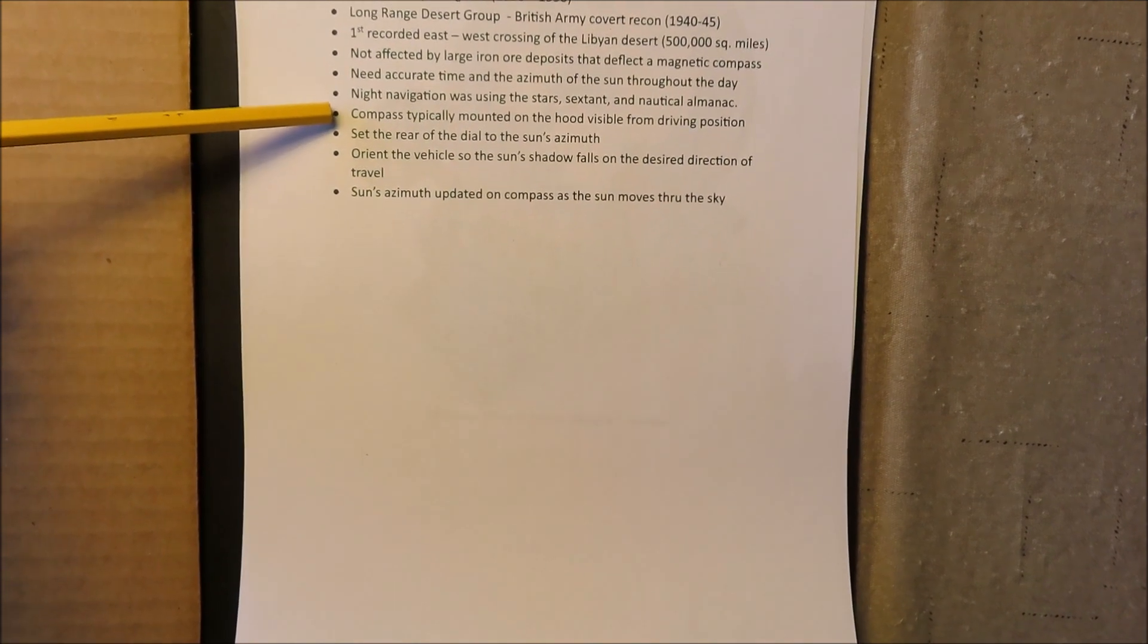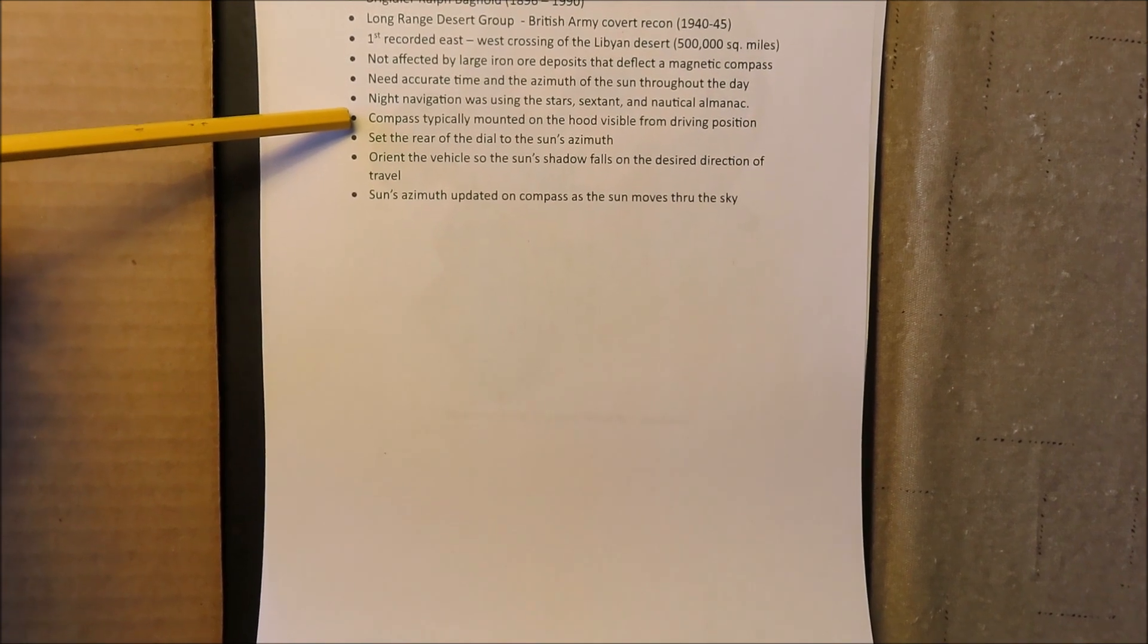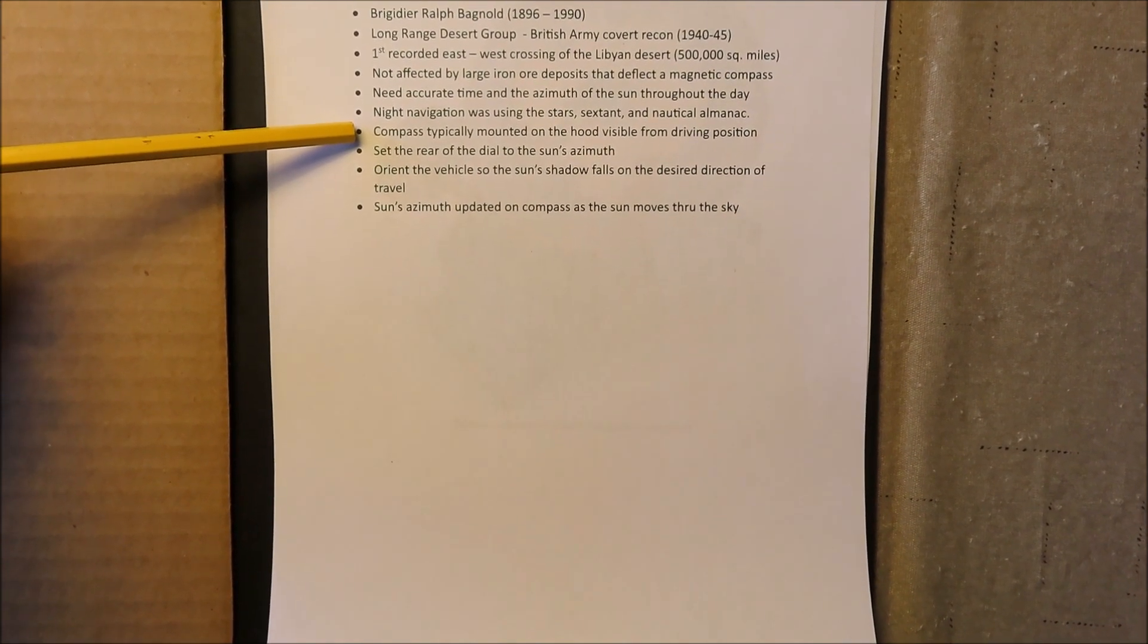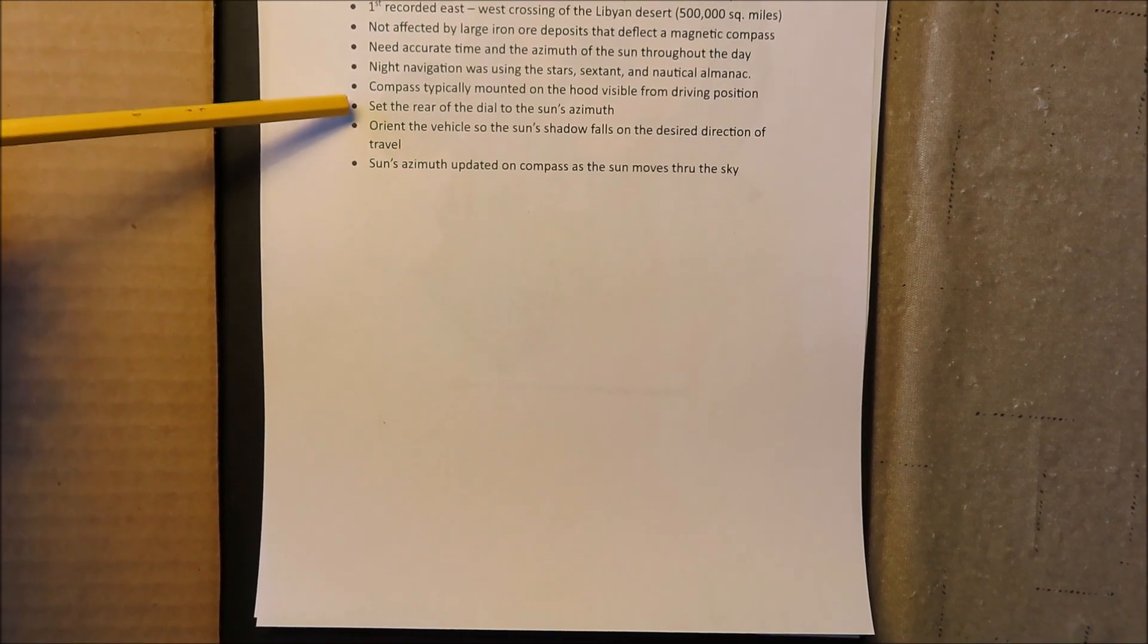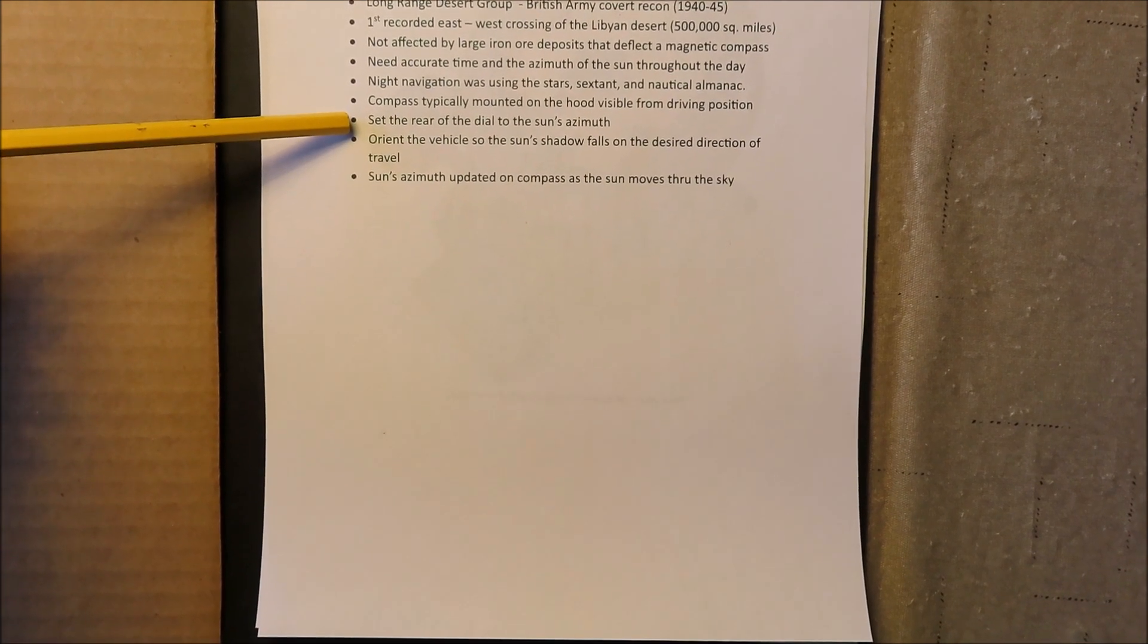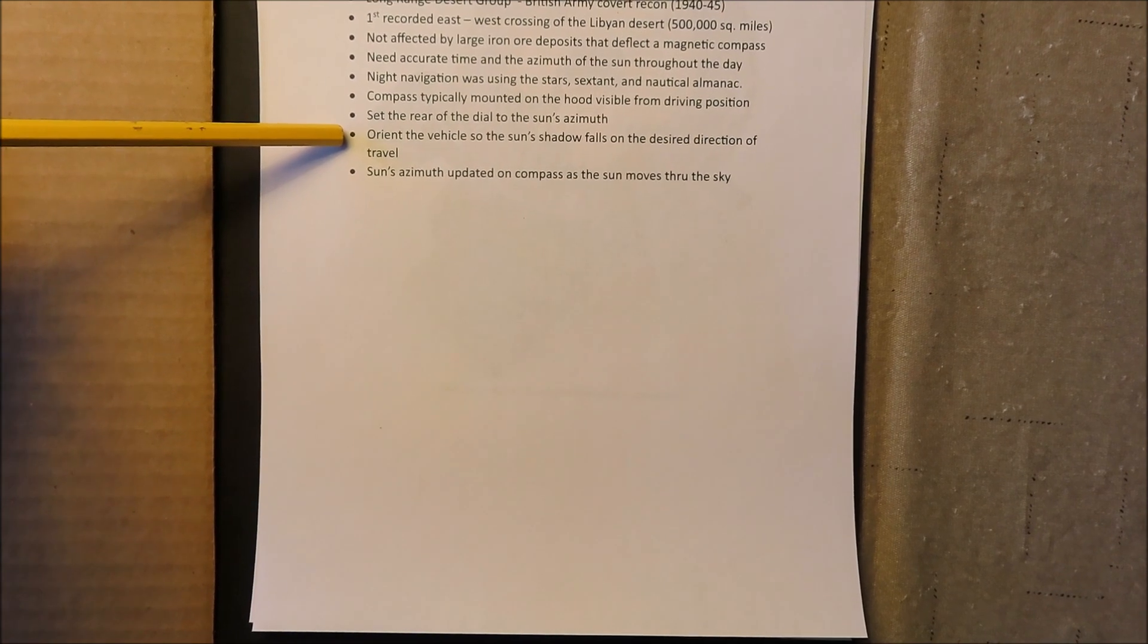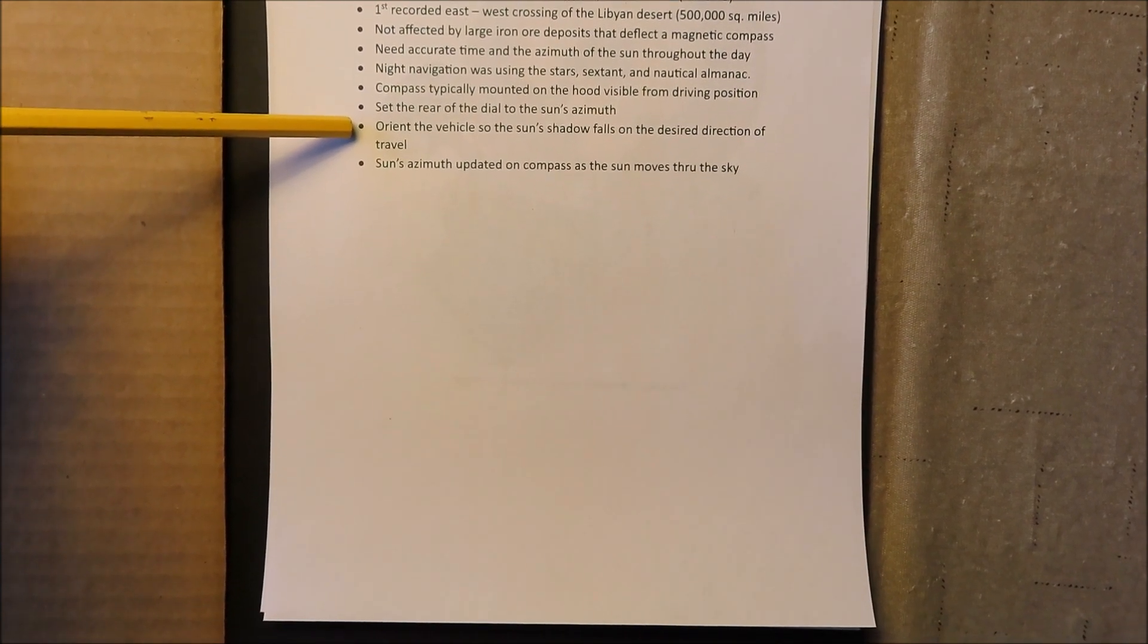I'll show you a picture of an actual one here in a minute. It was typically mounted on the hood of their vehicle and visible from the driving position. And the way it works is you set the rear of the dial to the azimuth of the sun, and then you turn your vehicle so that the shadow falls on the desired direction of travel.